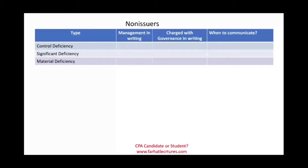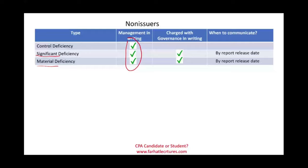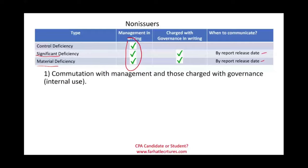For non-issuers, if you find control deficiencies, significant deficiencies, or material deficiencies, you have to communicate those in writing to management. You also have to communicate significant deficiencies and material deficiencies to those charged with governance, also in writing — by the release date for significant and material deficiencies, and within 60 days for control deficiencies.